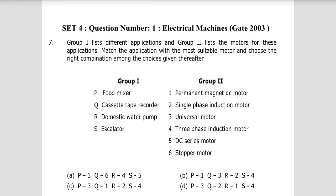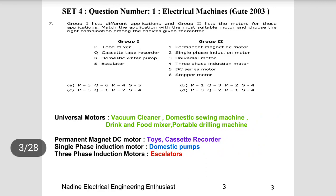Question 1: Group 1 lists different applications — food mixer, cassette tape recorder, domestic water pump, escalators. Group 2 lists motors — permanent magnet DC motor, single phase induction motor, universal motor, three phase motor, DC series motor, stepper motor. Match the application with the most suitable motor and choose the right combination. Universal motors are used in almost all places: vacuum cleaners, domestic swing pumps, mixers, portable drilling machines.